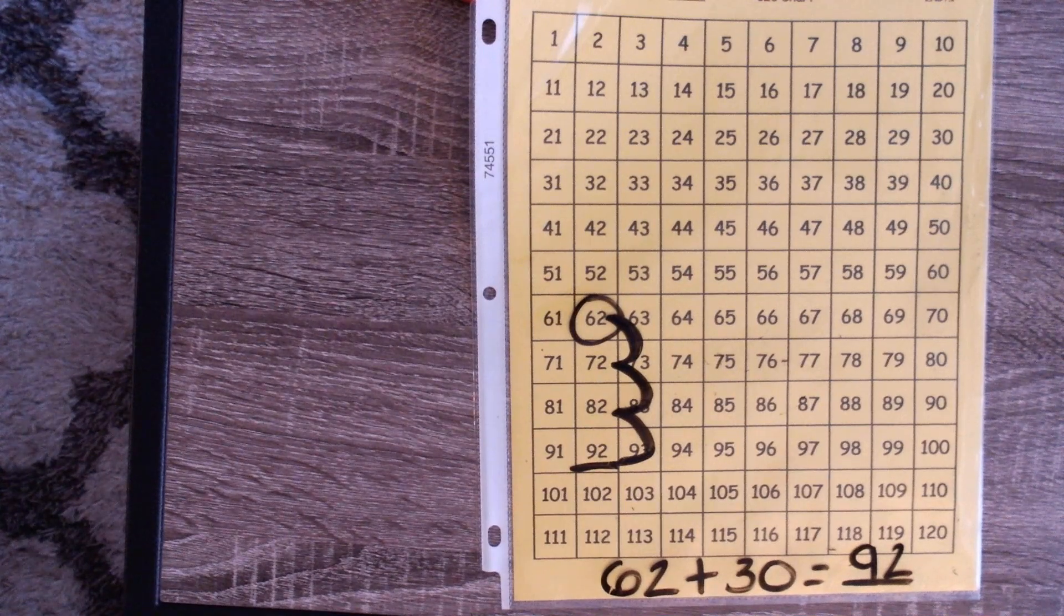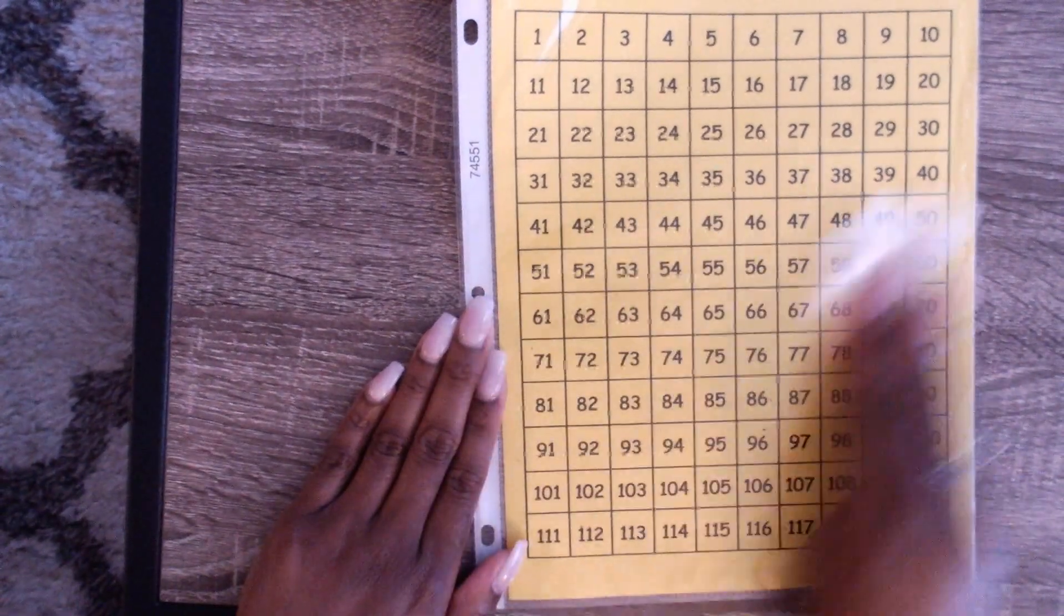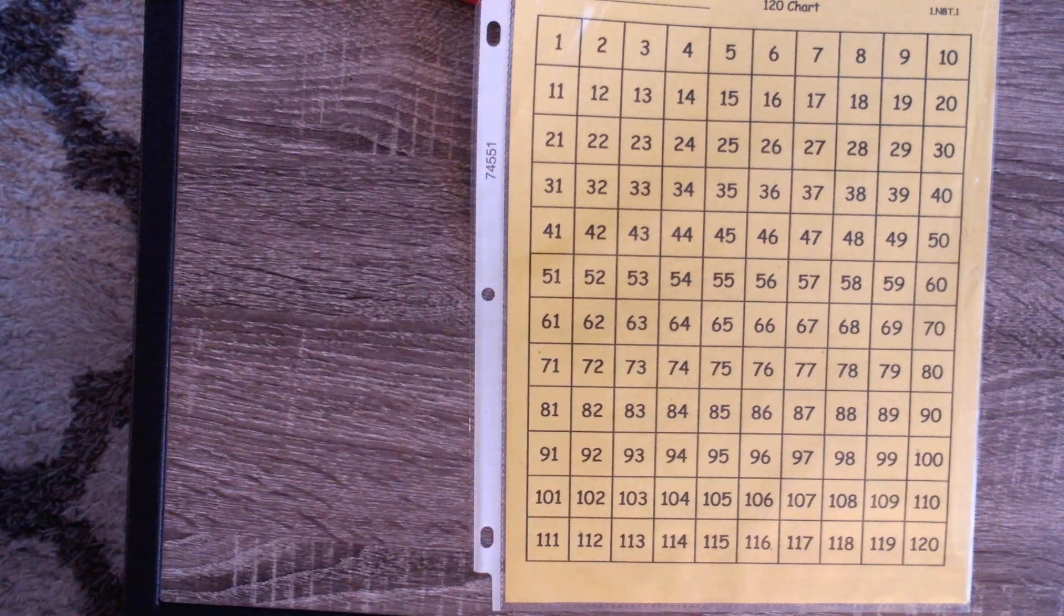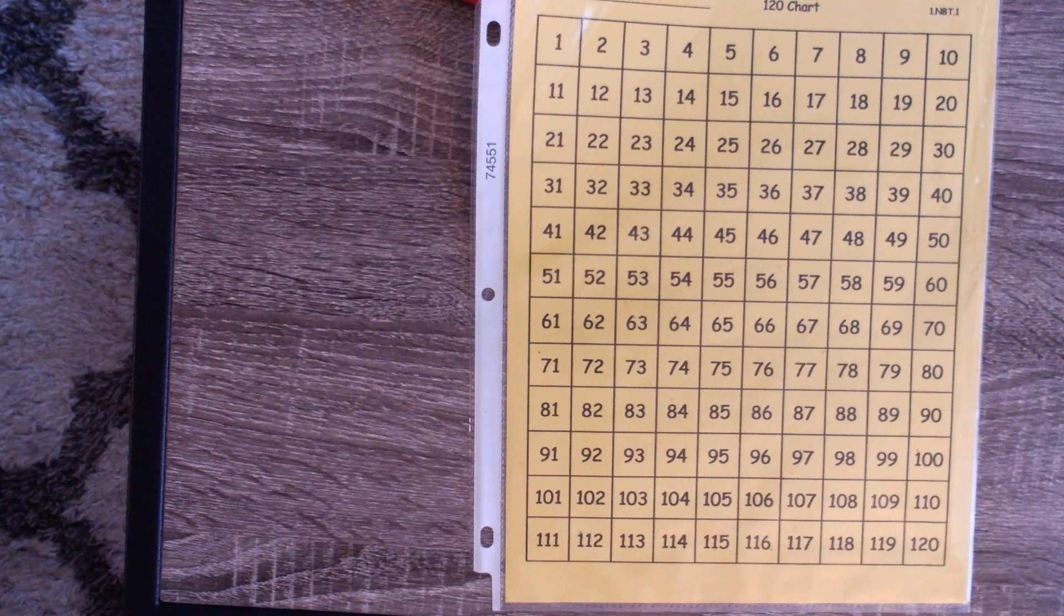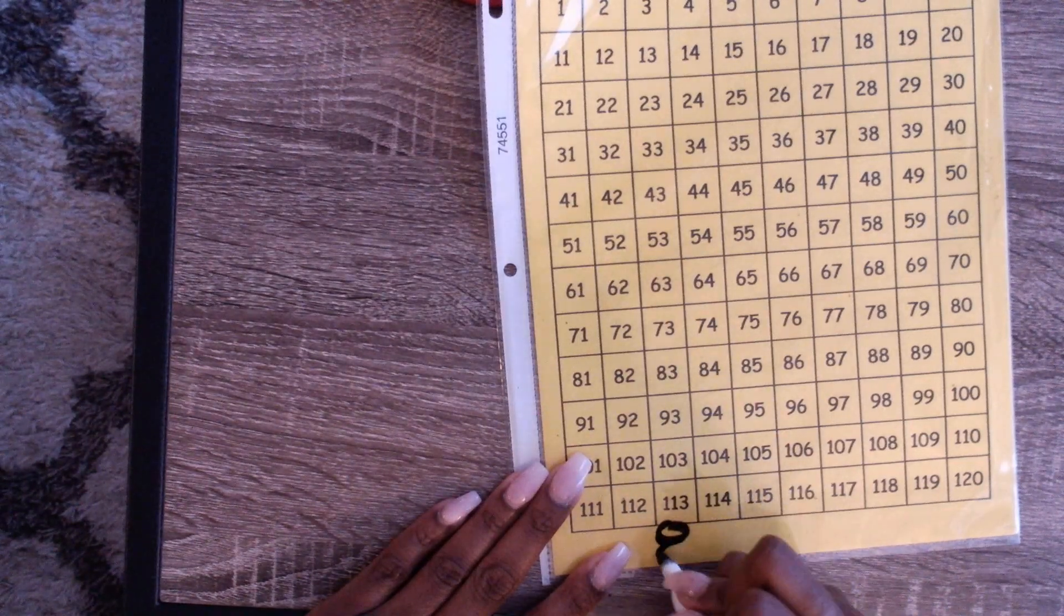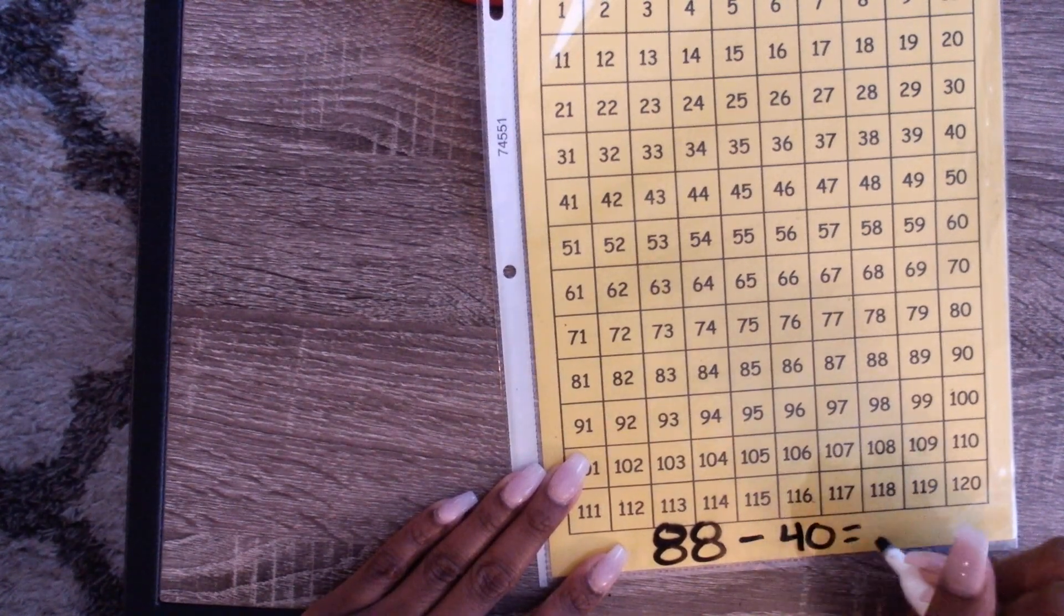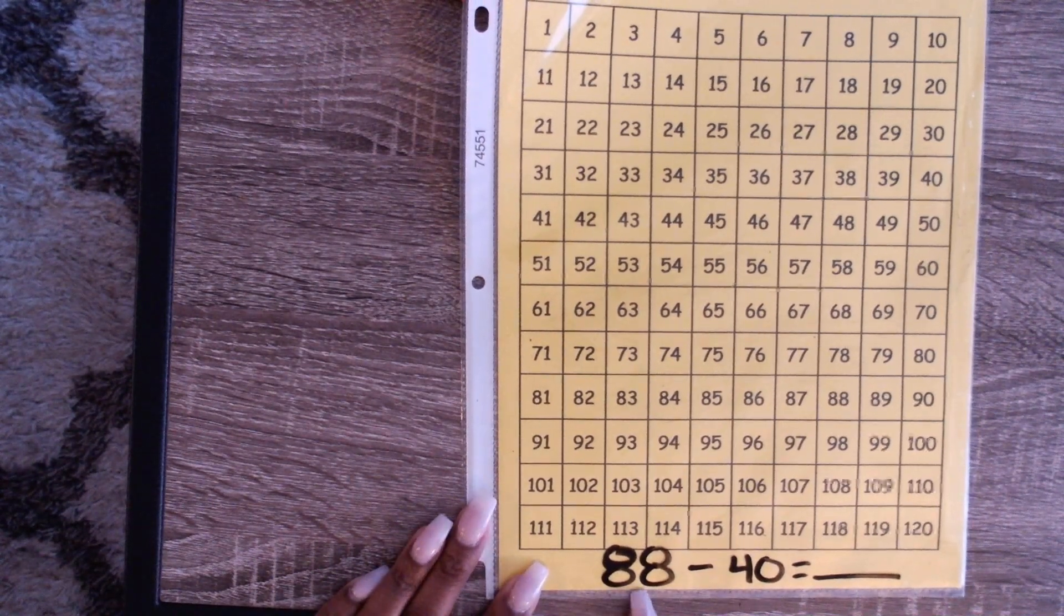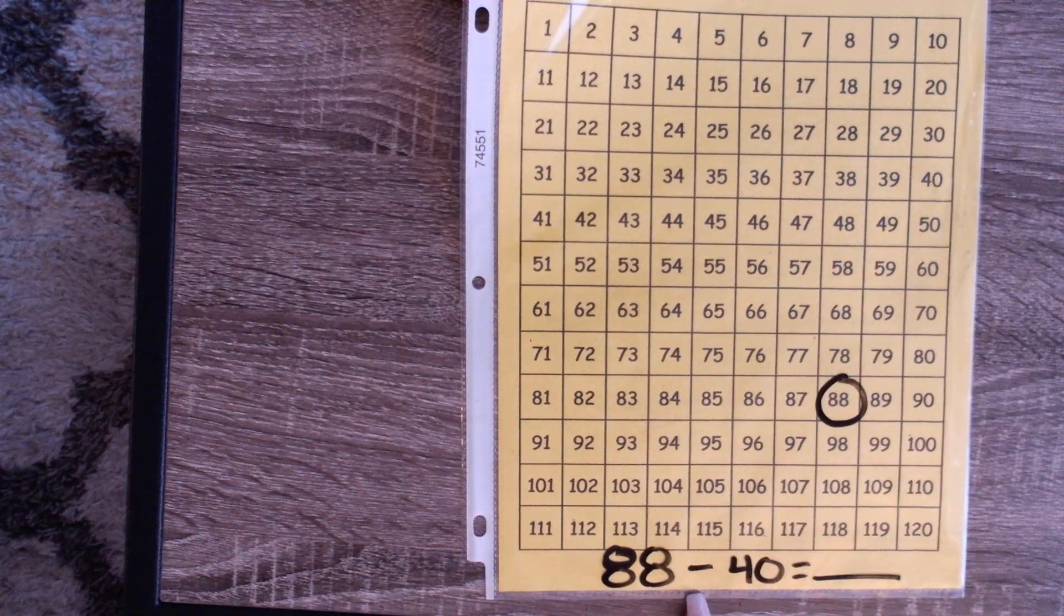Good job. Now our first equation, the first subtraction equation, let's try that one again. We're going to do a subtraction equation. Remember I said, whenever you are taking away using the 120s chart, you're going to back it up. Think of it that way: when you back up, your numbers get smaller. Let's try 88 minus 40. That was the first one. So 88 minus 40. The first thing we're going to do is look for the number 88. There it is. I'm going to circle this so I don't get lost.